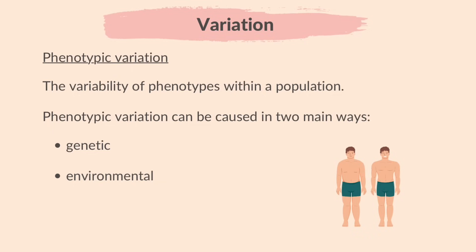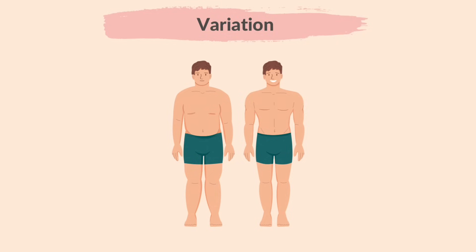For example, factors such as climate, diet and lifestyle can cause differences in phenotypes. An example of environmental variation is the difference in body type between an active person who exercises regularly and has a fit physique, and a person who leads a less active lifestyle and may have a less muscular body type.